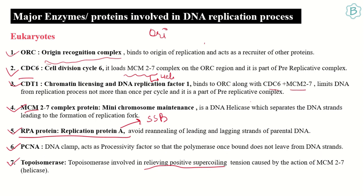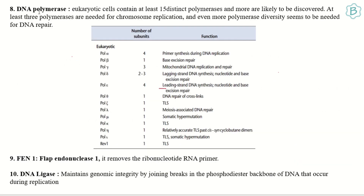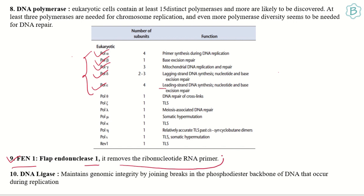In eukaryotes, DNA polymerases exist in various types — there are 15 different types. The most important ones when discussing replication are polymerase alpha, gamma, beta, delta, and epsilon. Next is FEN-1, the flap endonuclease 1, which removes all the RNA primers, similar to RNase H in prokaryotes.